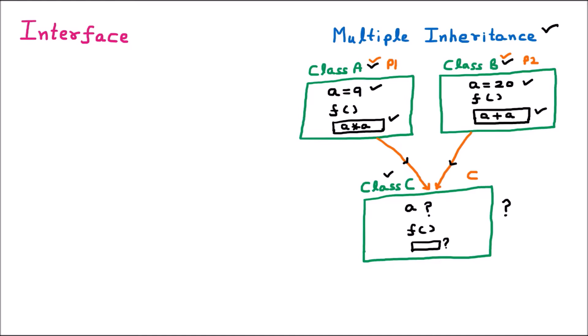To handle this in C++, virtual functions and related concepts were used. But in .NET such things are removed. In .NET, two classes going into one class is not possible. So multiple inheritance of two classes directly is not supported. This is made possible only with the help of interfaces.